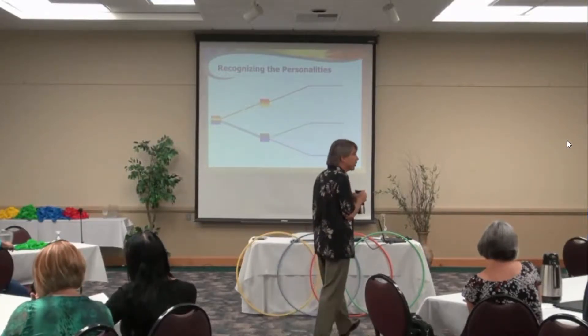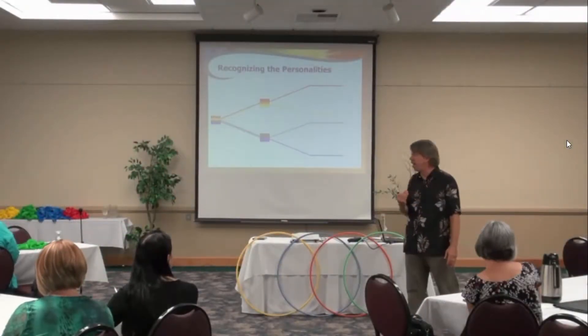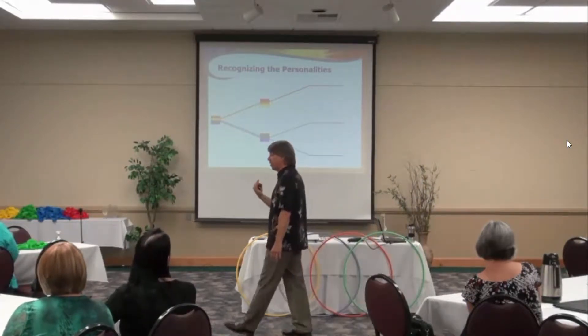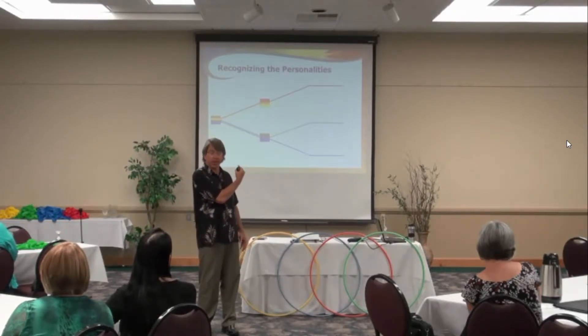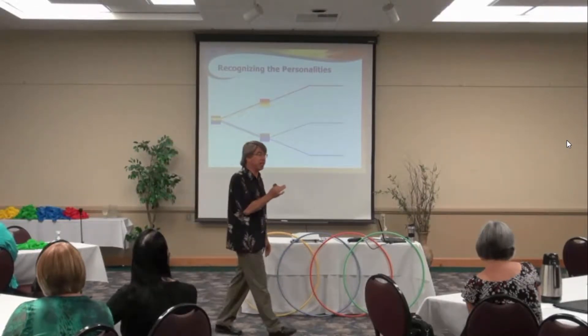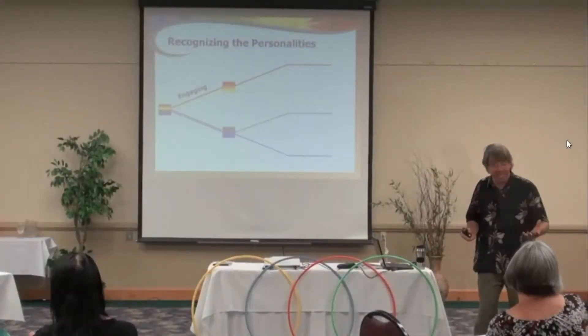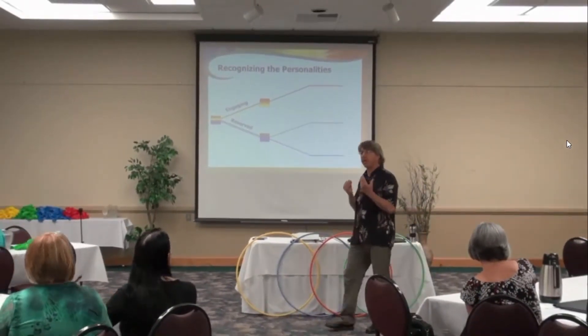We're gonna start to talk about individual personalities in two different ways. The top part of your page features something we invented back in 2005 called the branching chart. With a simple two-level read of someone you may be meeting for the very first time, you can determine what personality space they're in at that time. When you meet someone for the very first time, you'll notice they're either engaging or reserved.